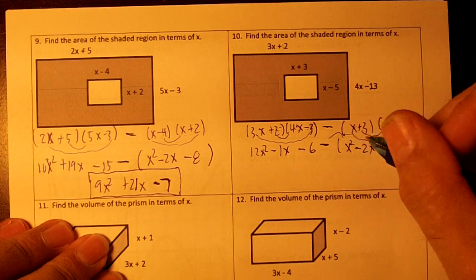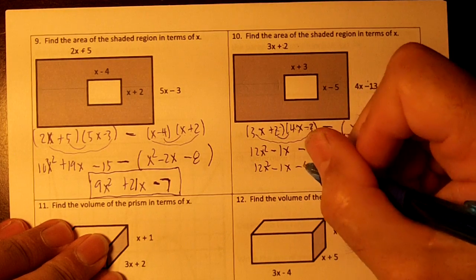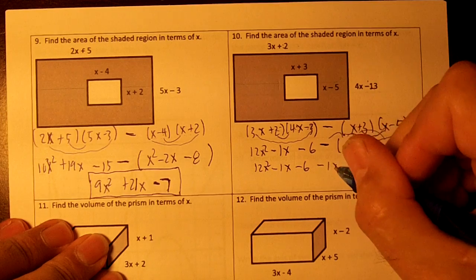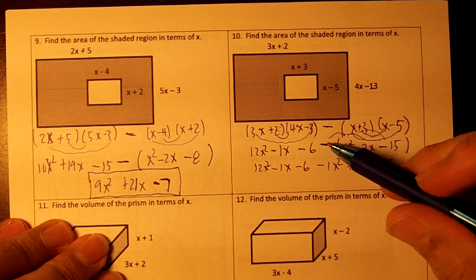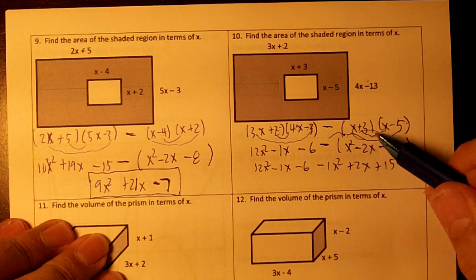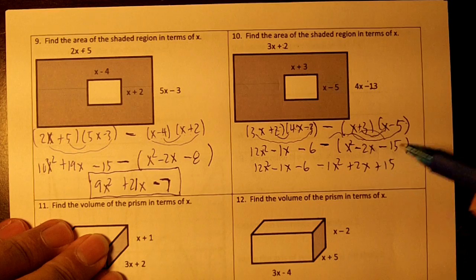On this one, I'm going to distribute the negative and rewrite it. So I have 12x squared minus 1x minus 6 minus 1x squared plus 2x plus 15. That negative makes the x squared negative. The negative makes the negative 2x a positive 2x. And the negative makes the negative a plus 15.